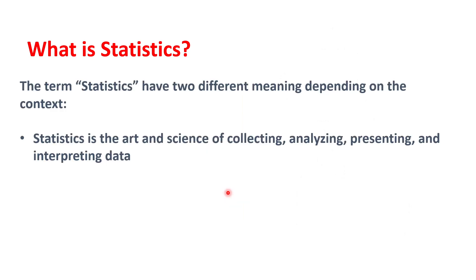Statistics, depending on the context, could mean one of two things. One is the art and science of collecting, analyzing, presenting and interpreting data. So, for example, this is a statistics class. Or that person, she is a statistician.